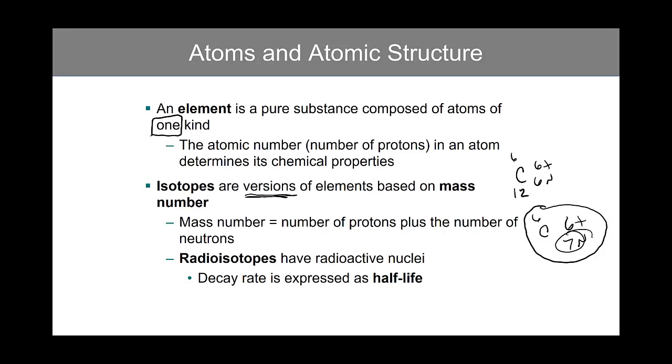So carbon-7 and carbon-8, where 7 and 8 represent the number of neutrons, those are isotopes of carbon.